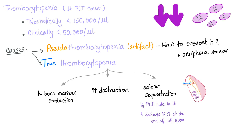True thrombocytopenia has three different causes. Remember anemia — we had anemia of underproduction and anemia of overdestruction. Same thing here. Thrombocytopenia: underproduction, overdestruction, and splenic sequestration, because one third of the platelet pool is hiding inside the spleen. As the spleen enlarges, it can destroy more platelets, decreasing the platelet count in the peripheral smear.